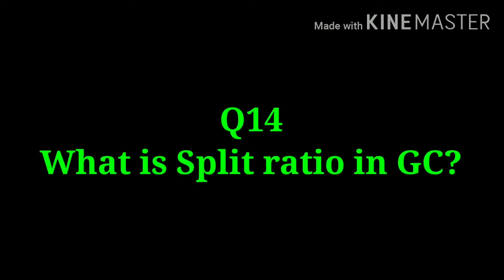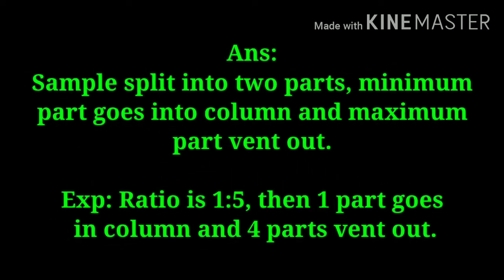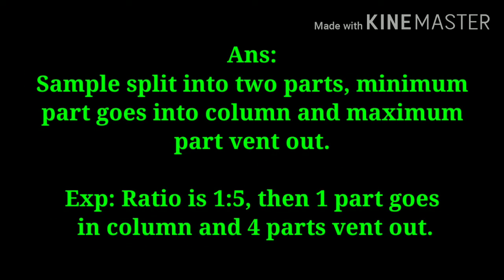What is split ratio in gas chromatography? The sample is split into two parts — a minimum part goes into the column and the maximum part goes out. For example, with a ratio of 1:5, one part goes to the column and four parts exit.